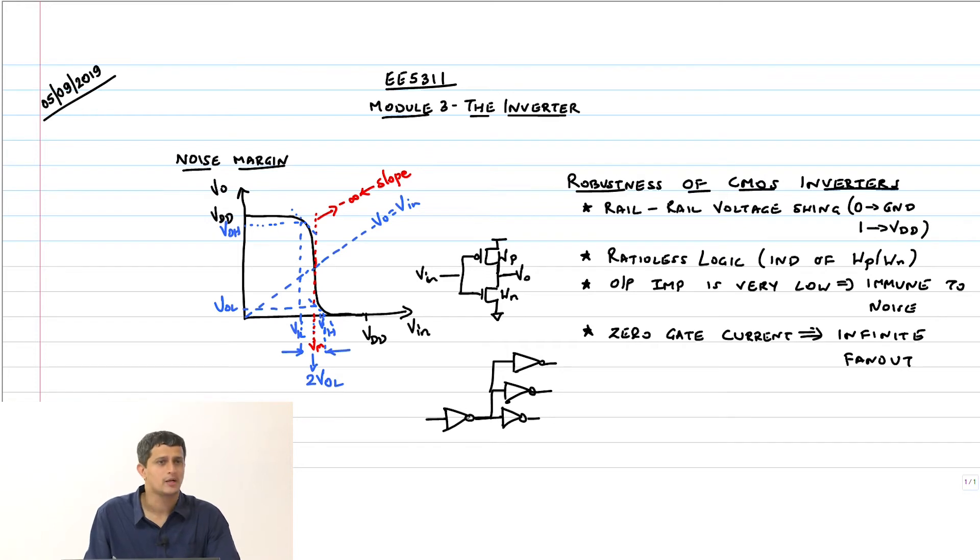How much current is available for charging or discharging this capacitor is primarily dependent on the transistors in this inverter. Whatever that pMOS can provide that is a charging current, whatever the nMOS can provide that is a discharging current. If some small gate current was needed in order to drive the other inverters, then you are going to limit this current that is available for charging or discharging the capacitor.